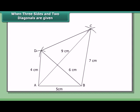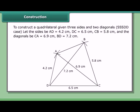ABCD is the required quadrilateral. To construct a quadrilateral given three sides and two diagonals — the SSSDD case — let the sides be AD = 4.2 cm, DC = 6.5 cm, CB = 5.8 cm, and the diagonals AC = 6.9 cm, BD = 7.2 cm.